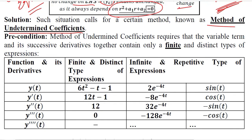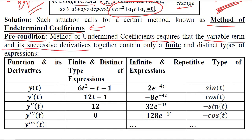This will become clear as we work through a numerical example. However, before we practically start the solution, we have to be sure of a precondition that must hold in order for us to be able to solve this using the method of undetermined coefficients. It requires that the variable term and its successive derivatives together contain only a finite and distinct number of types of expressions. So the variable term we are assuming, if we take its derivatives, they will have finite and distinct types of expressions.